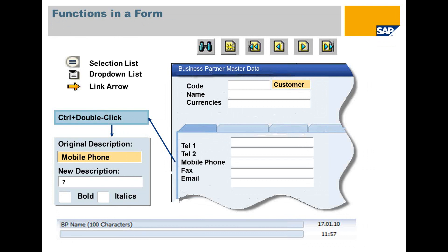At the bottom of every screen, you will find the status bar that always shows the name, length, and contents of the current field. Furthermore, if you enable the View System Information menu item, the system also displays some technical information about the field, which you can use for creating queries or formatted searches, which you may need if you are working with the Software Development Kit, which is the SDK.